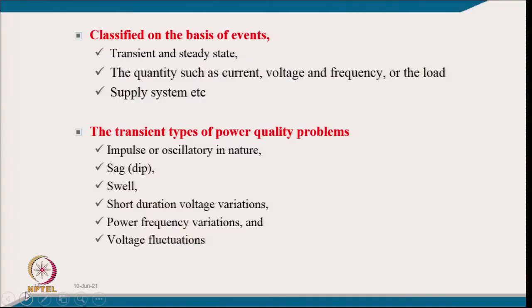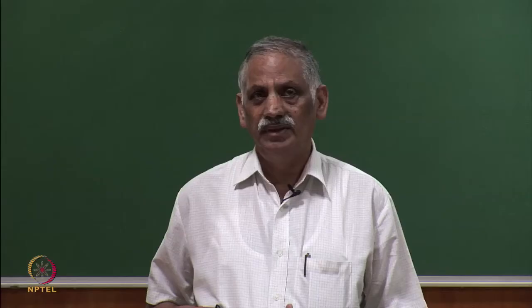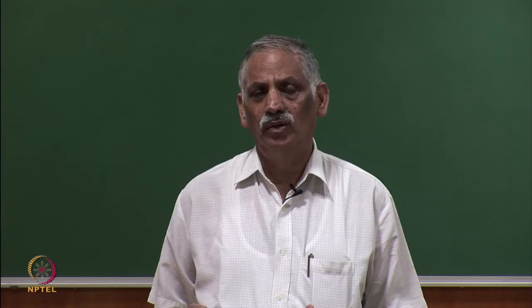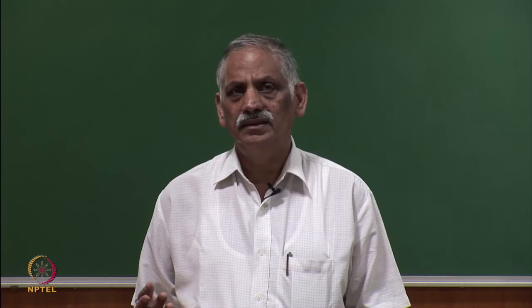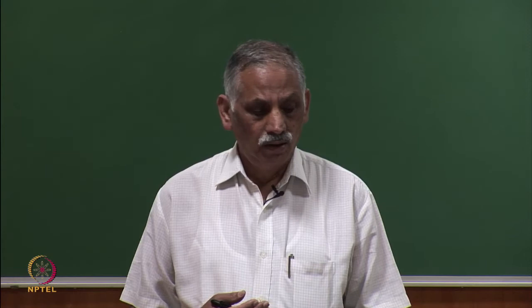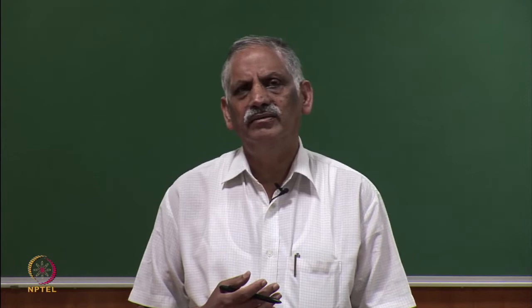Transient power quality problems can be impulsive or oscillatory in nature. Short-duration voltage variations include voltage dip or swell lasting from 3 cycles to maybe a minute. Steady-state problems include long-duration voltage variation — for example, depressed voltage in the evening when overload occurs, making fans run slower and lighting systems not function properly. Voltage waveform distortion also occurs, such as noise in fans when an inverter feeds the home load, causing torque pulses.